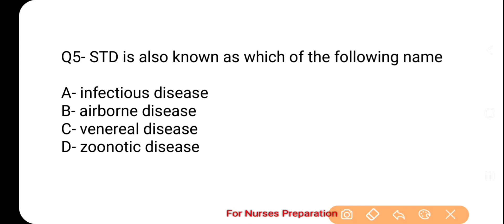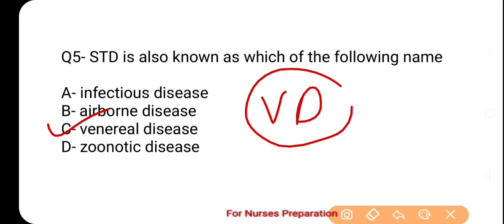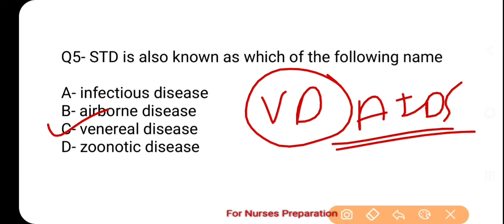And the correct option is option number C — Venereal disease. STD stands for Sexually Transmitted Disease, and it is also called VD, i.e., Venereal Disease, because these diseases spread from an infected person to a healthy person through sexual contact. Currently, the most dangerous and deadly STD is AIDS. In India, STDs have spread like malaria and tuberculosis and have become a major public health concern.